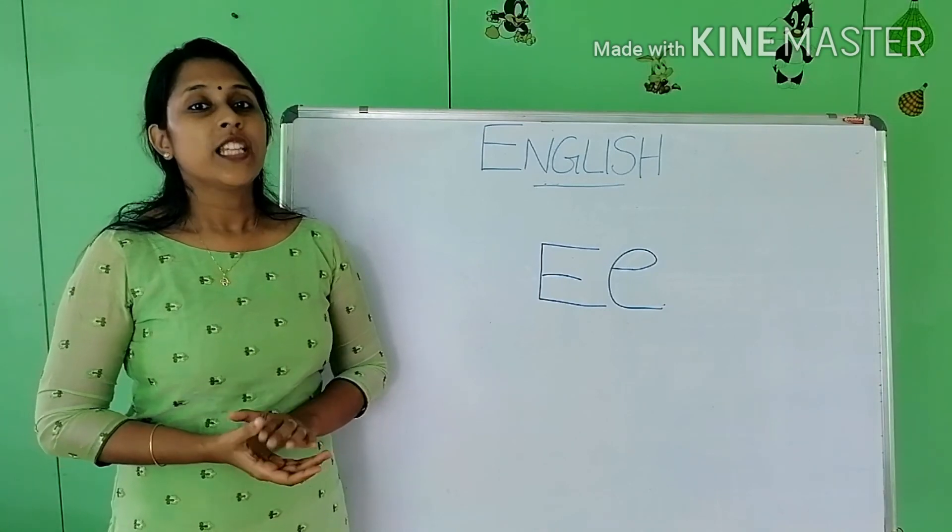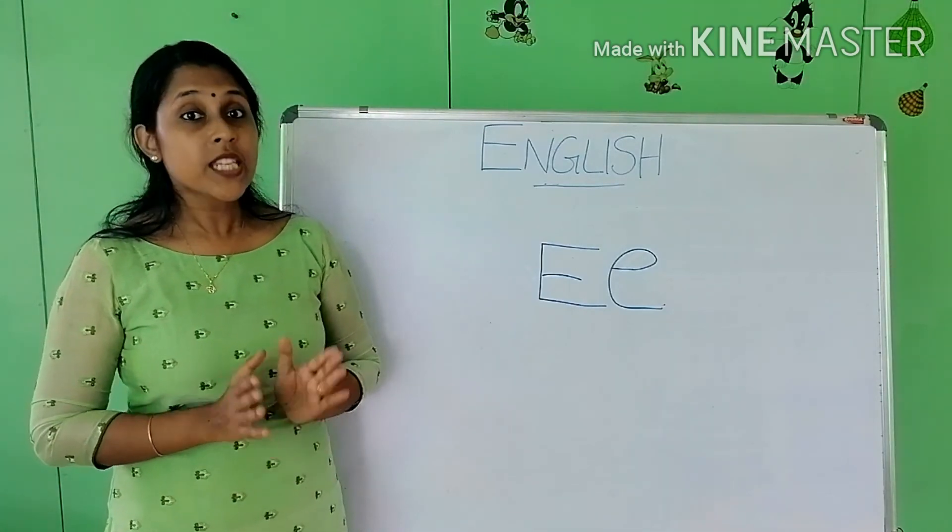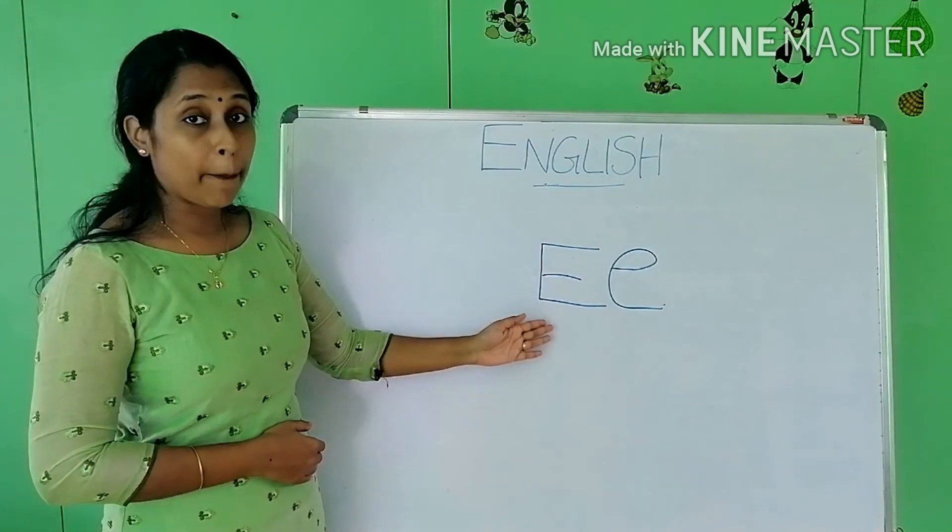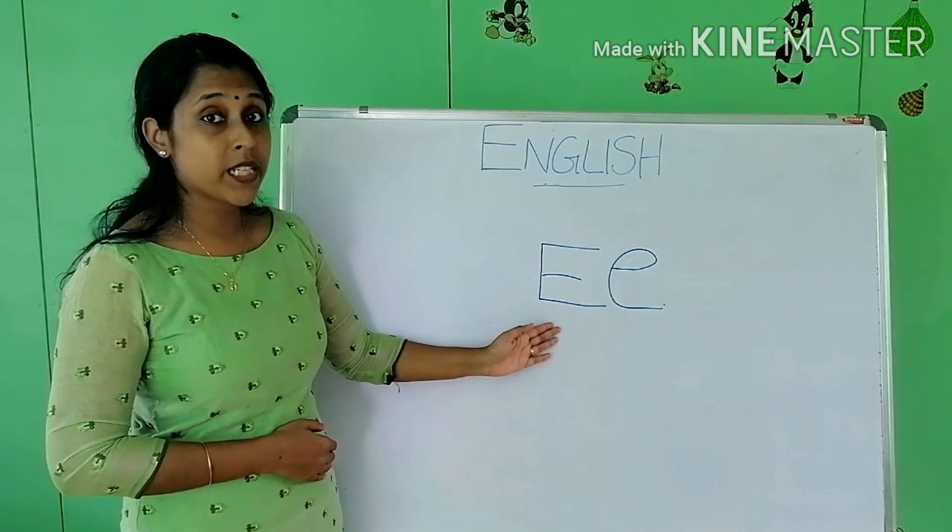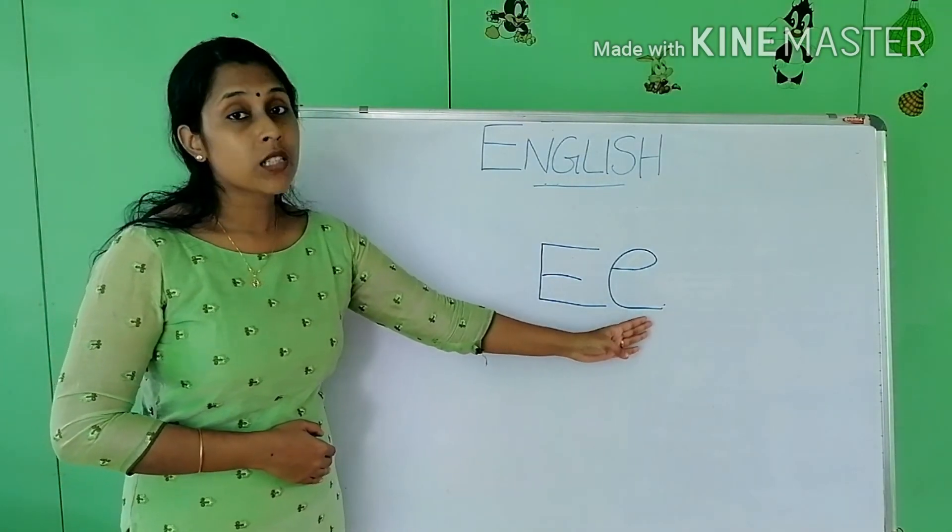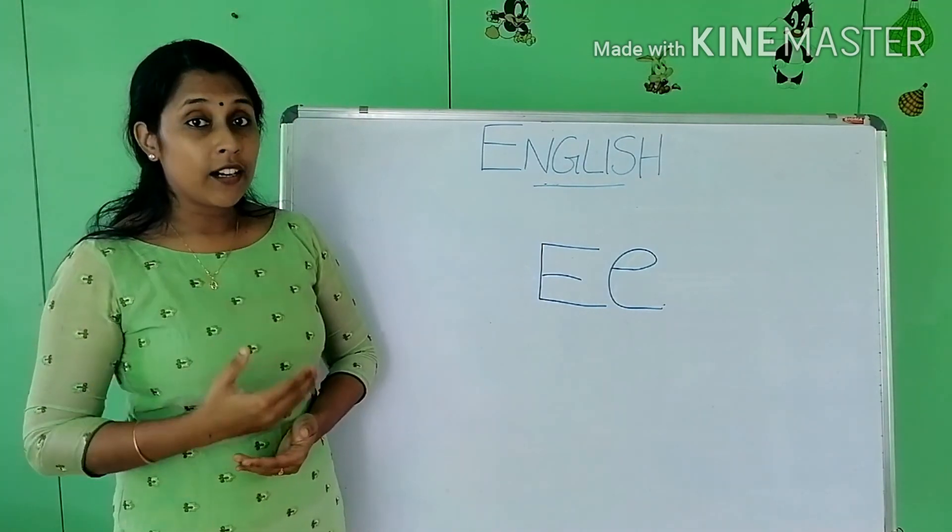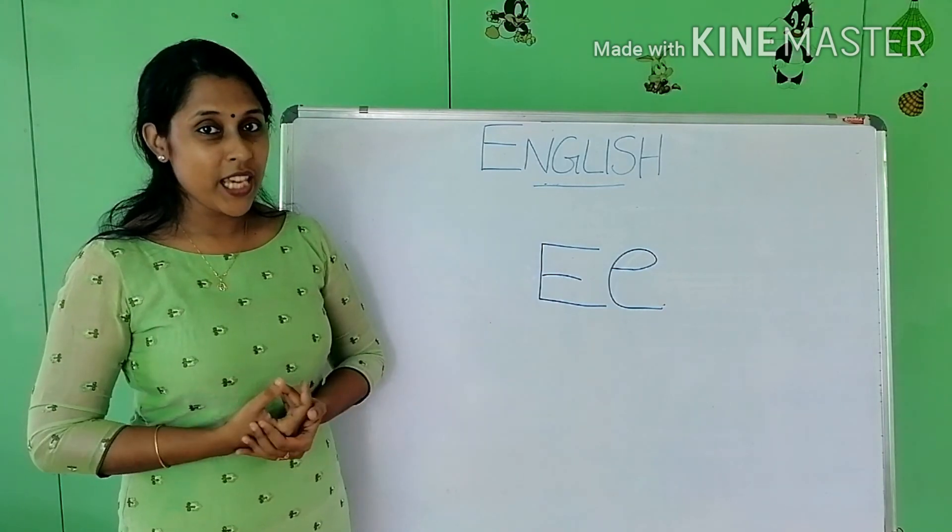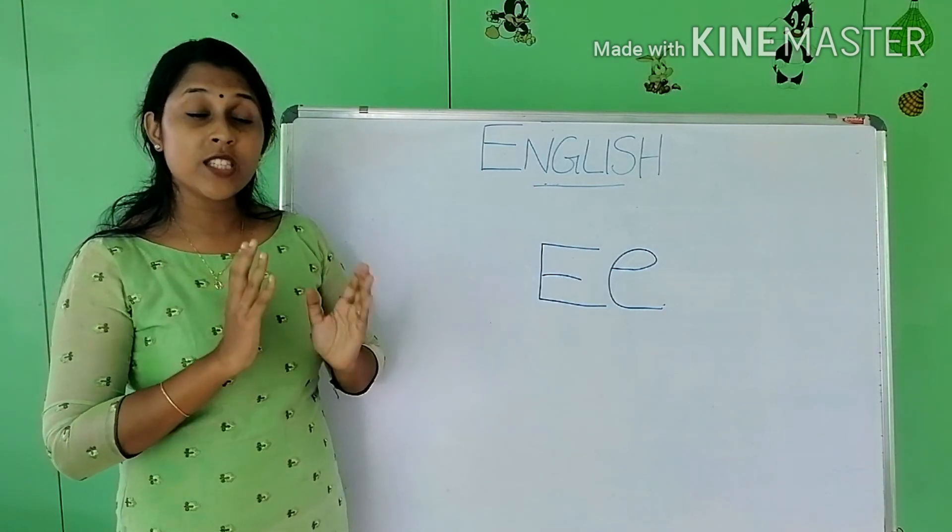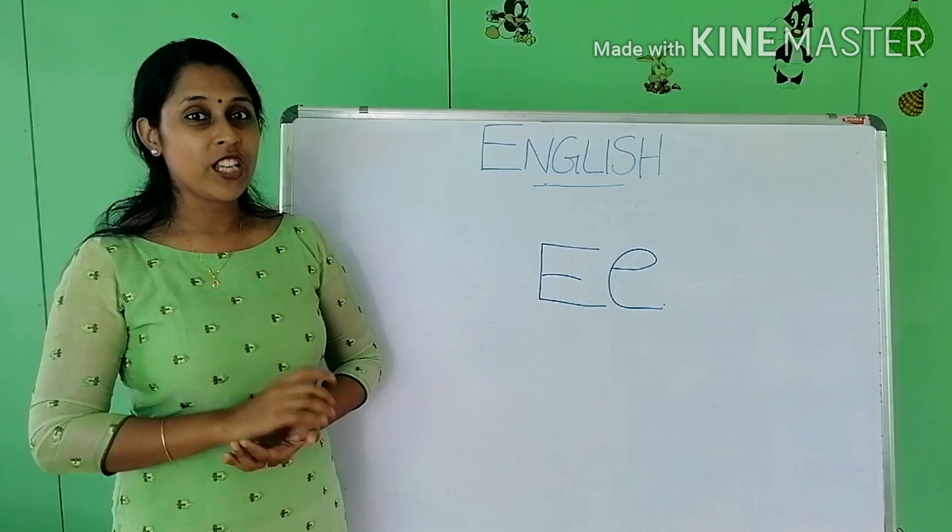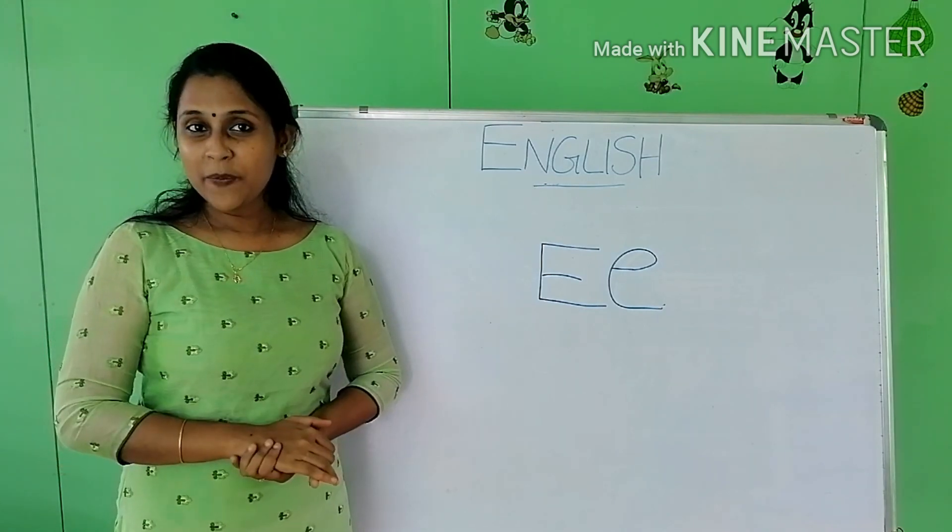So these are the words that start with the alphabet E. This is the uppercase E, that is the capital E. This is the small E, lowercase E. You have to learn the words that start with E and learn all these words, and take a video. Send it to me.